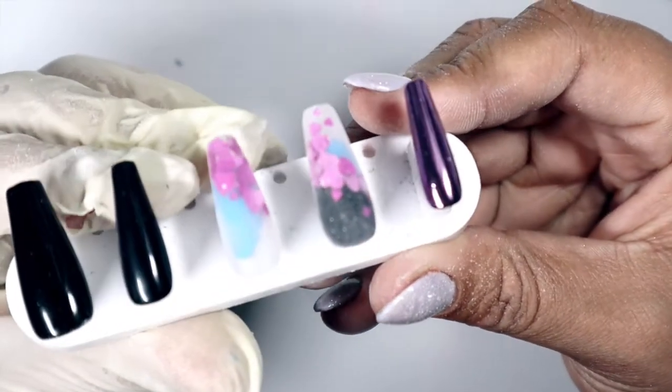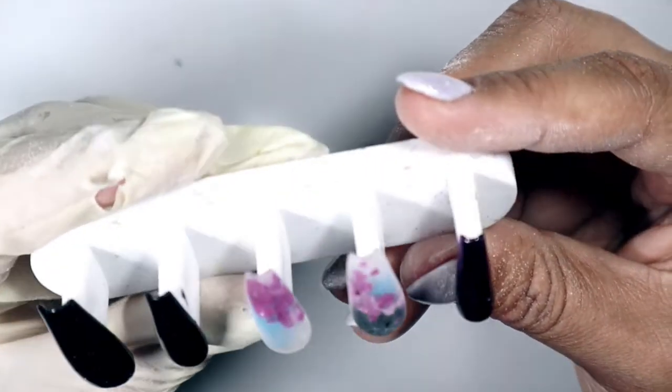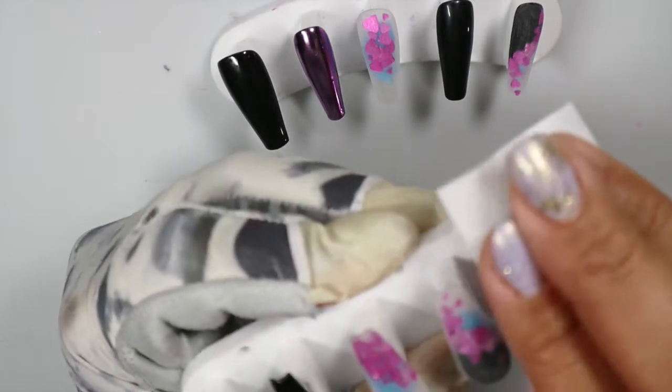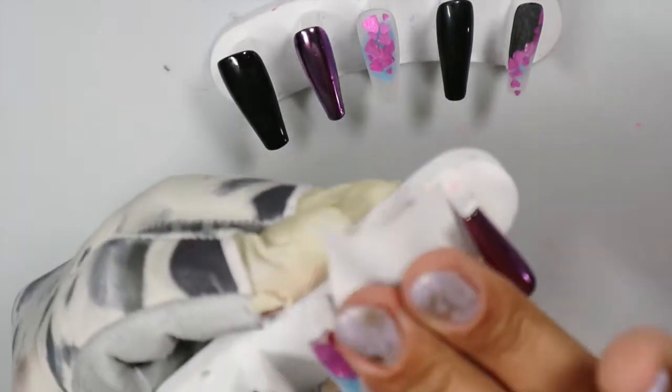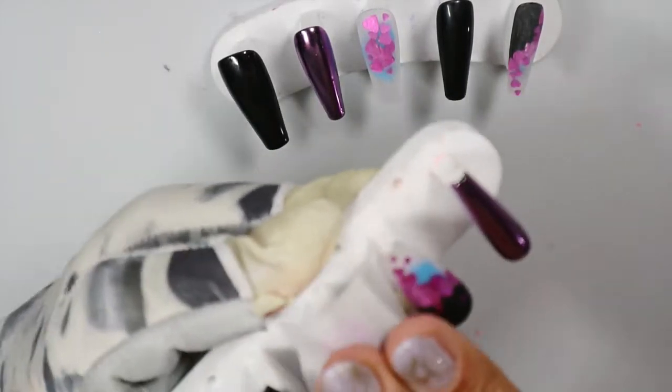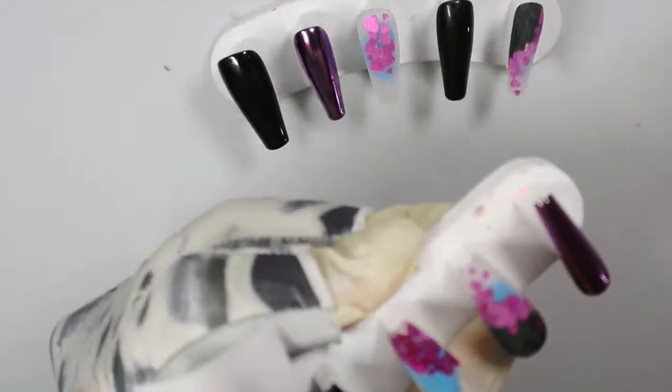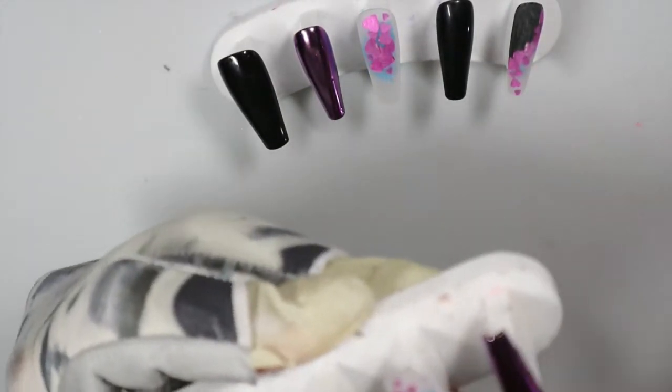So as we saw in the inspiration design, these were matte top coated with the exception of the chrome nail. So I'm going to go in with a matte top coat. I am using the velvet top coat from files by less. I'm just going to give these a quick wipe off and then go in with that matte top coat. And then I added some crystals. So there were Swarovski crystals on the original design. That's what my customer wanted.